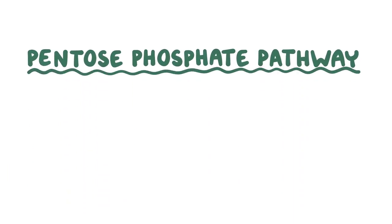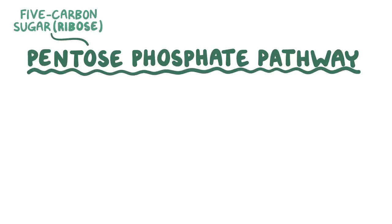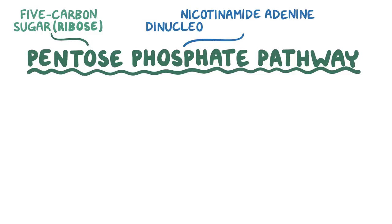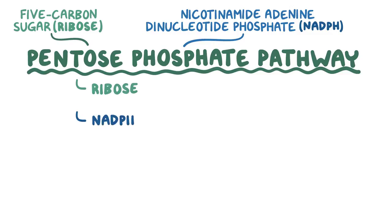The pentose phosphate pathway is named for the products it ultimately generates. Pentose refers to a 5-carbon sugar called ribose, and phosphate refers to a molecule called nicotinamide adenine dinucleotide phosphate, or NADPH. So the pentose phosphate pathway is an alternative pathway that glucose can enter when the cells need to make ribose and NADPH.